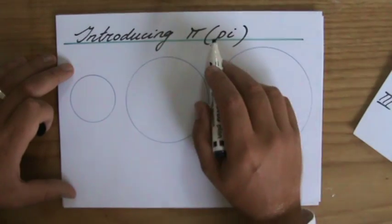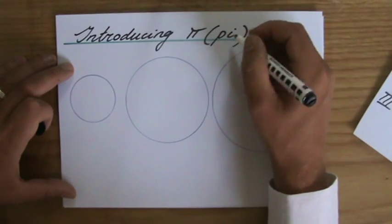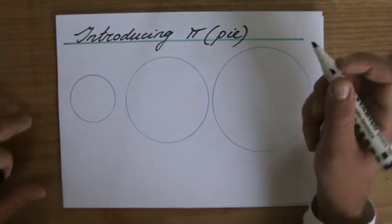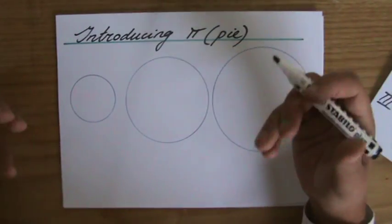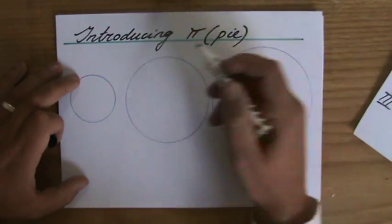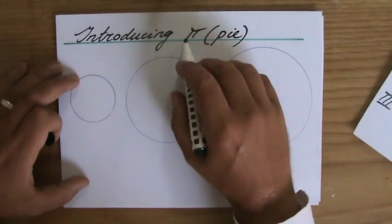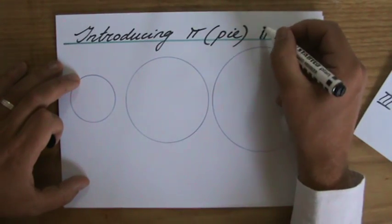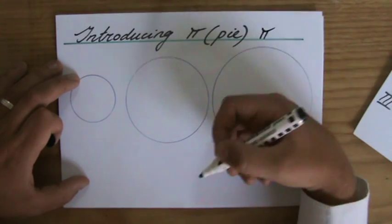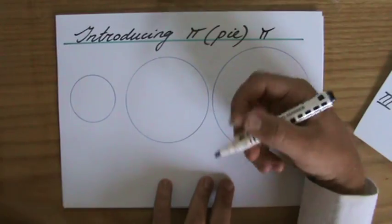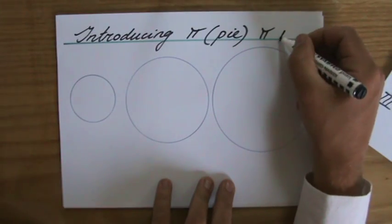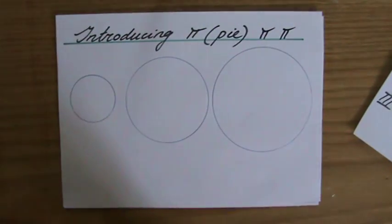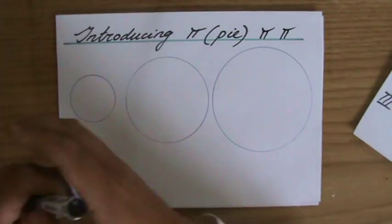You pronounce it as P-I, Pi. And if you have to write that symbol yourself, it's nothing more than two sticks and a little roof on top of those two sticks — two sticks and a little roof there, slightly curved — which is the symbol Pi.